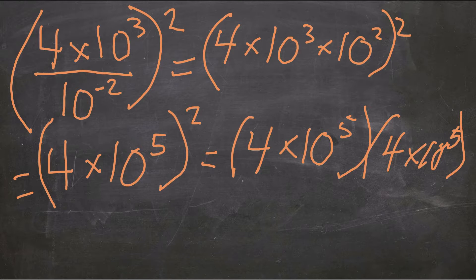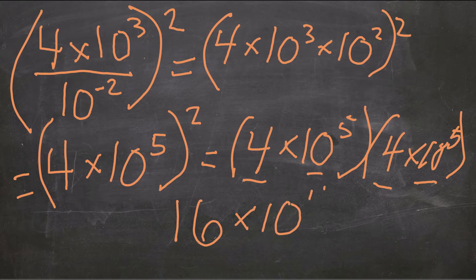So remember, we're just multiplying, so we can use the commutative property of multiplication. I'm going to take 4 times 4, which is 16, and 10 to the power of 5 times 10 to the power of 5. Combining those exponents, we get 10 to the power of 10.